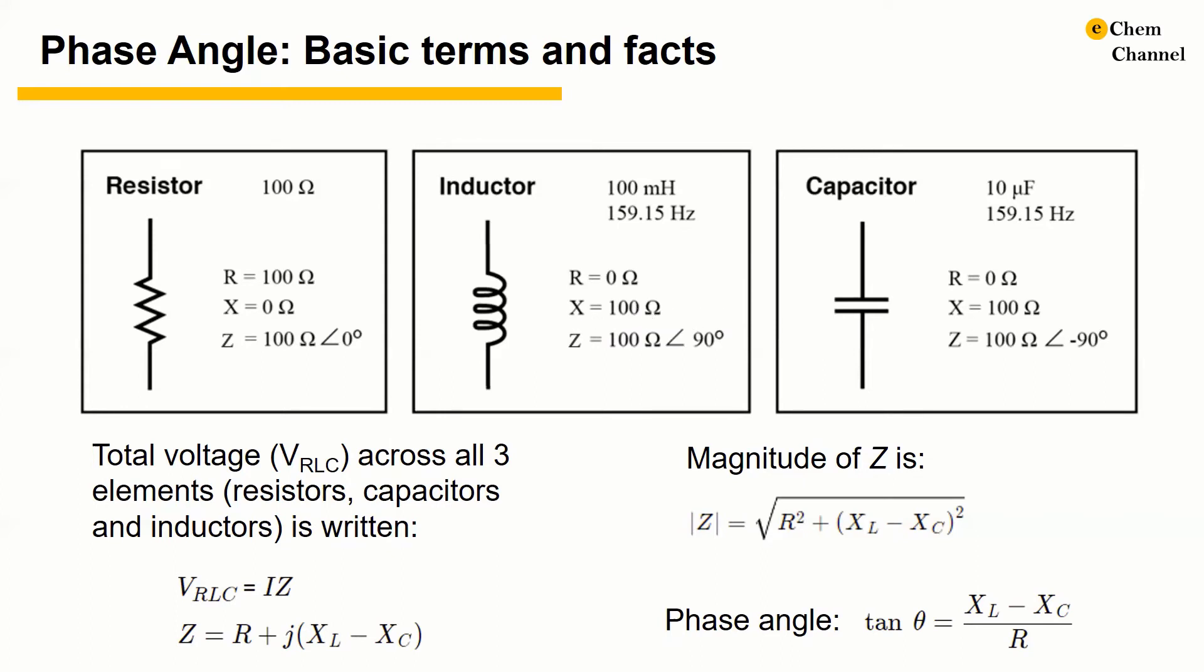The impedance Z is a comprehensive expression of any and all forms of opposition to current flow, including both resistance and reactance. Z is present in all circuits and in all components.